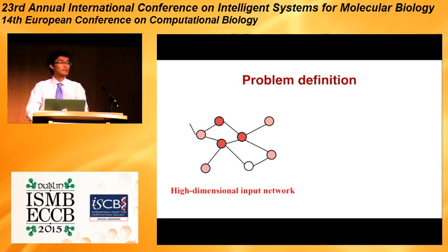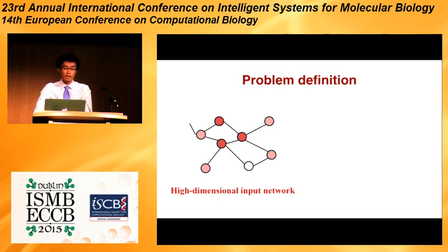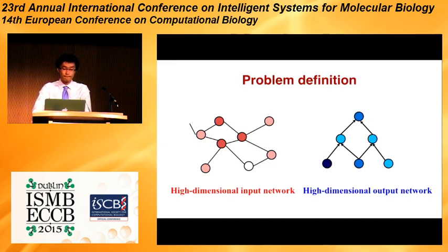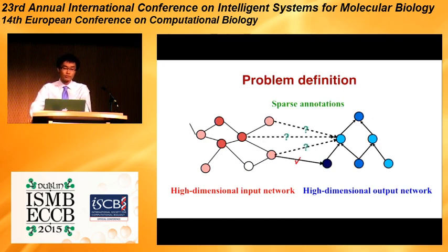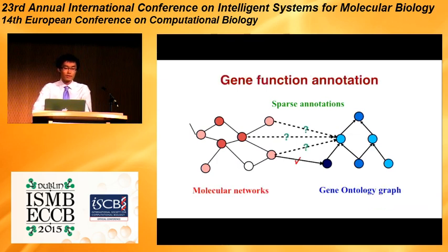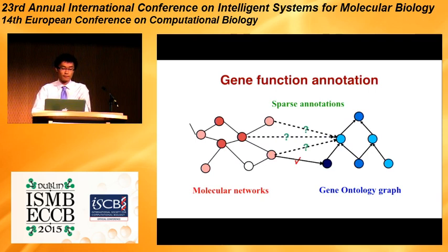Before I introduce our method, let's first take a look at the problem definition. Our method is not only limited to gene function annotation, but can also be used for many other problems with a high-dimensional input network and also a high-dimensional output network, where we only observe very sparse annotations between the input and output network. We want to do prediction for the other unobserved annotations. In the gene function annotation problem, the input network is the molecular networks and the output network is the gene ontology graph, and we want to predict the annotations between genes and functions.